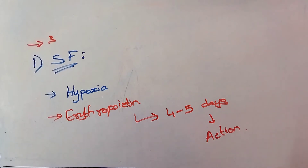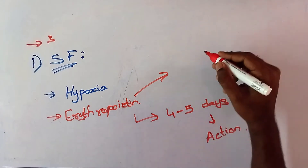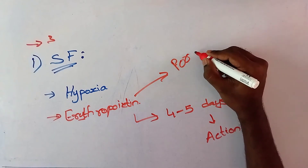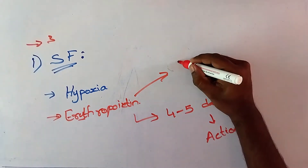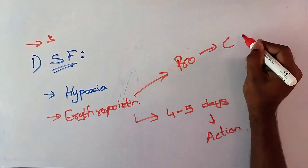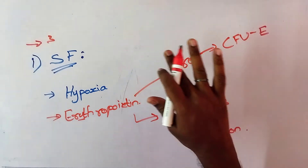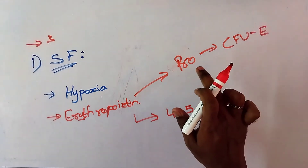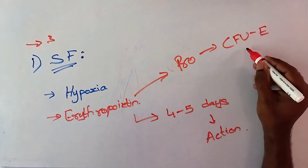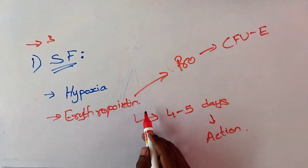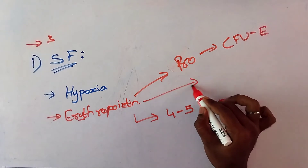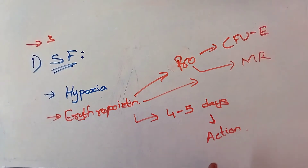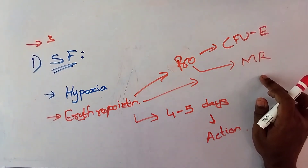This erythropoietin promotes production of pro-erythroblast from CFU-E. It also promotes the development of pro-erythroblast into mature RBC. That means pro-erythroblast is the first stage of erythropoiesis, and mature RBC is the last stage. So erythropoietin acts in all the stages in the formation of erythropoiesis.